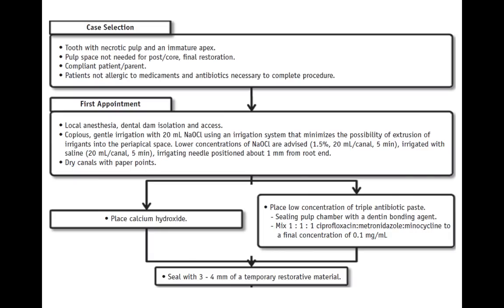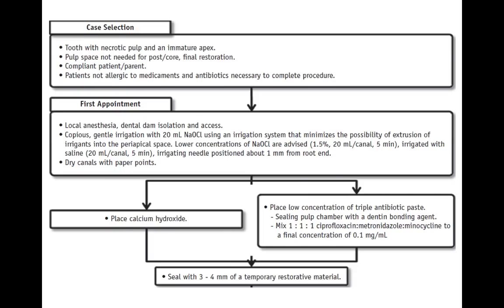To prevent minocycline-induced discoloration, seal the pulp chamber with dentin bonding agent so minocycline will not migrate above the cementoenamel junction and cause tooth discoloration. This is an important MCQ: why is dentin bonding applied when using triple antibiotic paste? The answer is to prevent discoloration caused by minocycline. Then seal with 3–4 mm of a temporary restorative material — the minimum thickness of cavit or any temporary restorative material should be 3.5 mm to prevent micro-leakage.